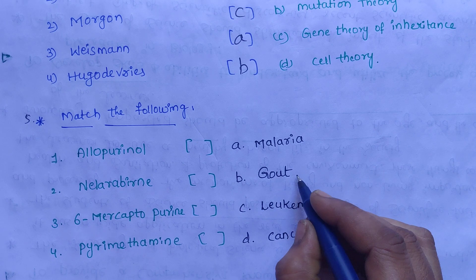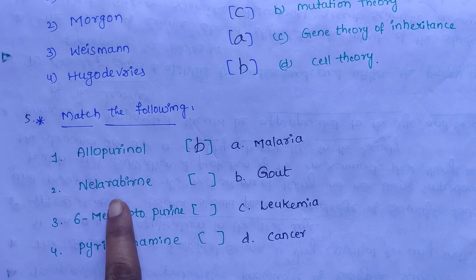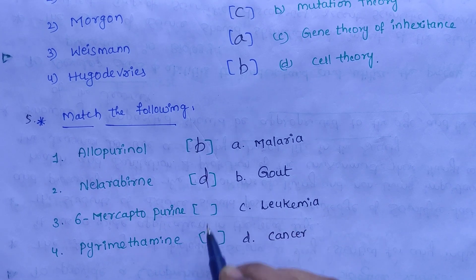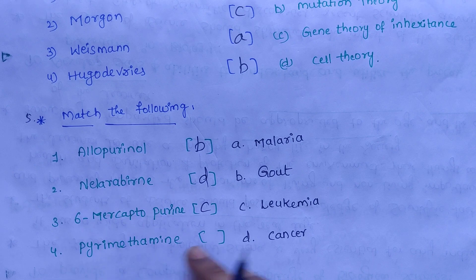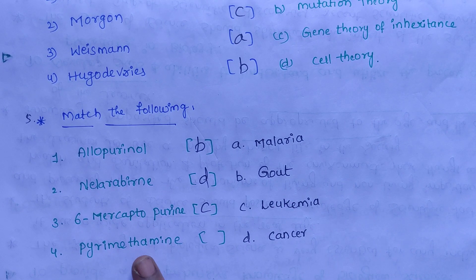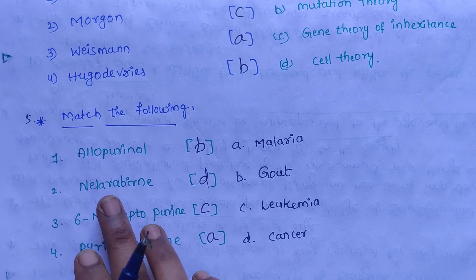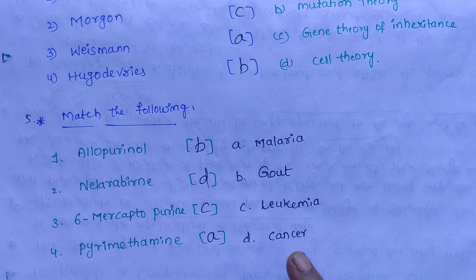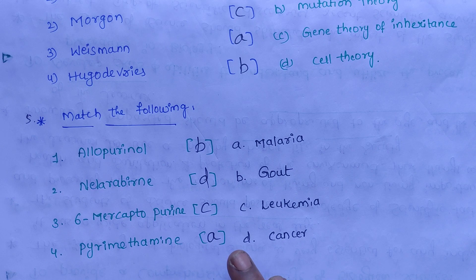Allopurinol is used to treat gout disease, so the correct option is B. Nelarabine is used to treat cancer, so the correct option is D. 6-Mercaptopurine is used to treat leukemia. Pyrimethamine is used to treat malaria, so the correct option is A.